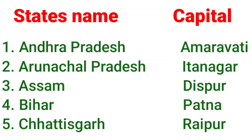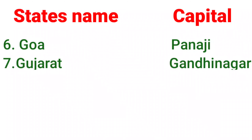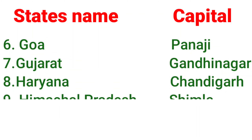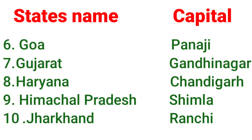Capital of Chhattisgarh is Raipur. Next, the 6th state is Goa. Goa's capital is Panji. Gujarat's capital is Gandhinagar. Haryana's capital is Chandigarh.